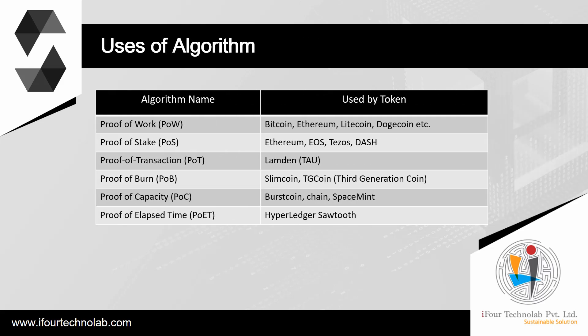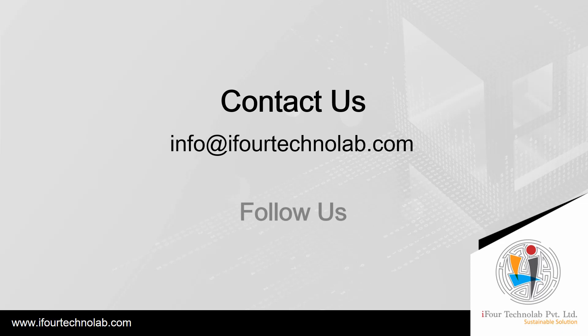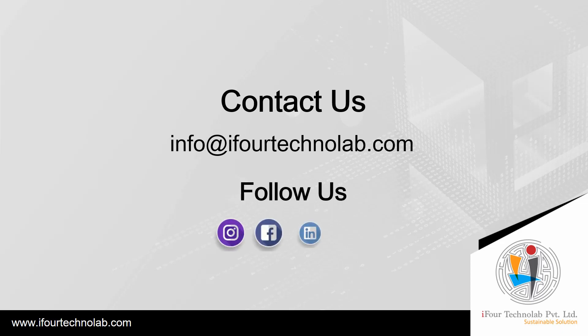Proof of work is used by Bitcoin, Ethereum, Litecoin, Dogecoin, and others. Proof of stake is used by Ethereum, EOS, Tezos, and Dash. Proof of transaction is used by Lambden and Tau. Proof of burn is used by Slimcoin, TG Coin, and 3rd Generation Coin. Proof of capacity is used by Burst Coin, Chain, and Space Mint. Proof of elapsed time is used by Hyperledger Sawtooth. That's it in this video. Thank you for watching and stay tuned for our next video.